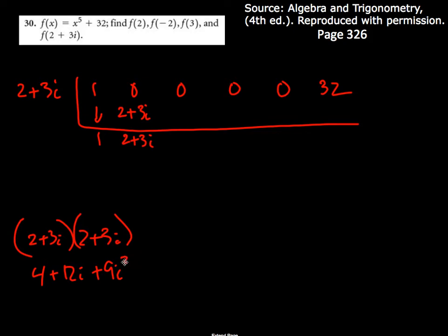So it'll be 4 plus 6 plus 12i plus 9i squared. But I know that i squared is negative 1, so really this is negative 9. And negative 9 plus 4 would be negative 5. So it'll be negative 5 plus 12i.